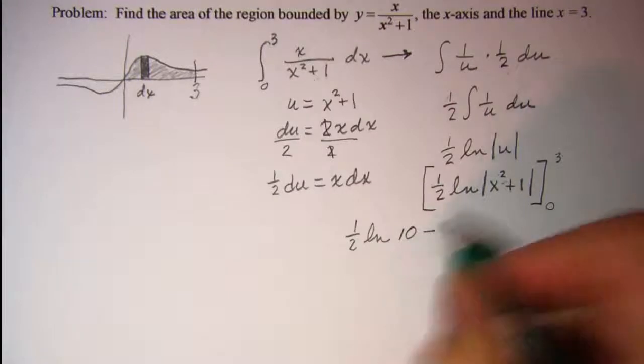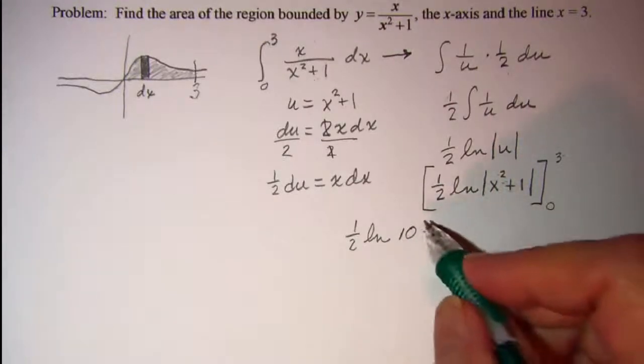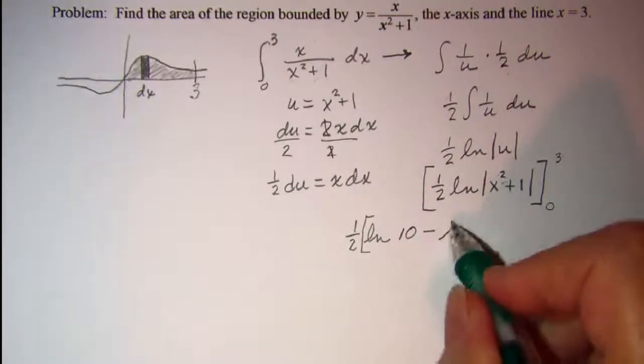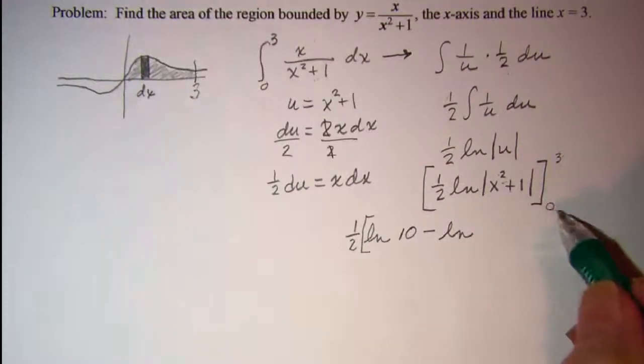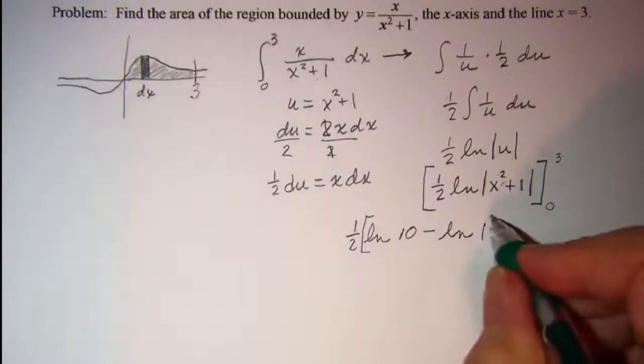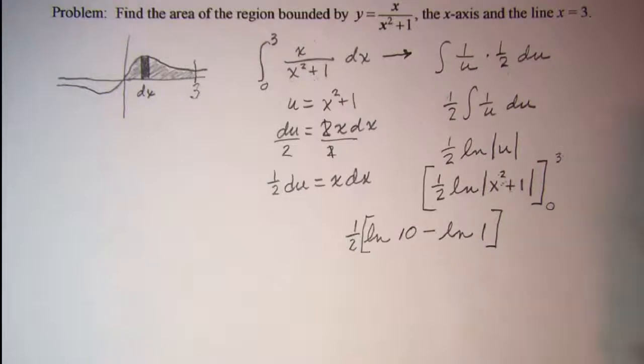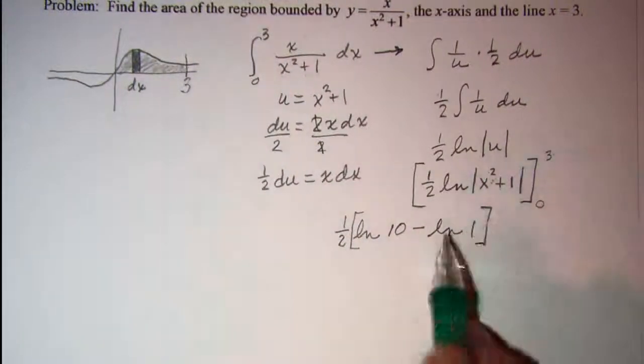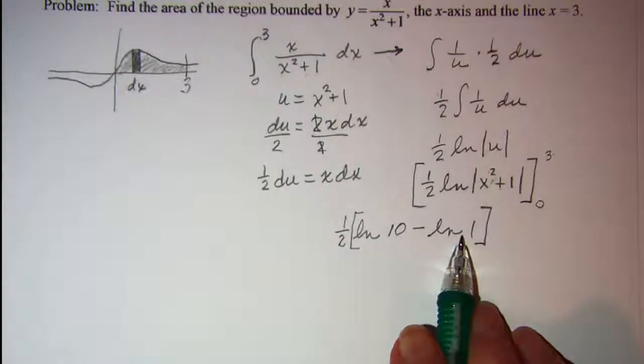Minus ln of 0 squared, which is 0 plus 1 is 1. ln of 1 is 0.